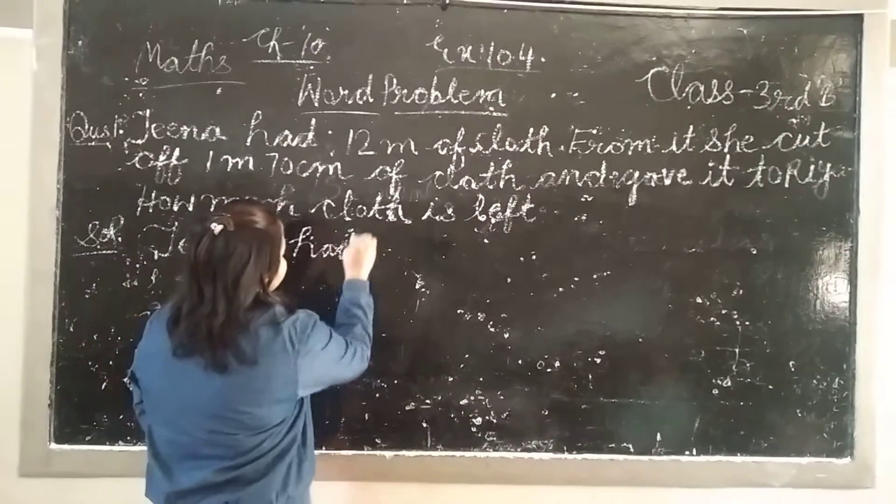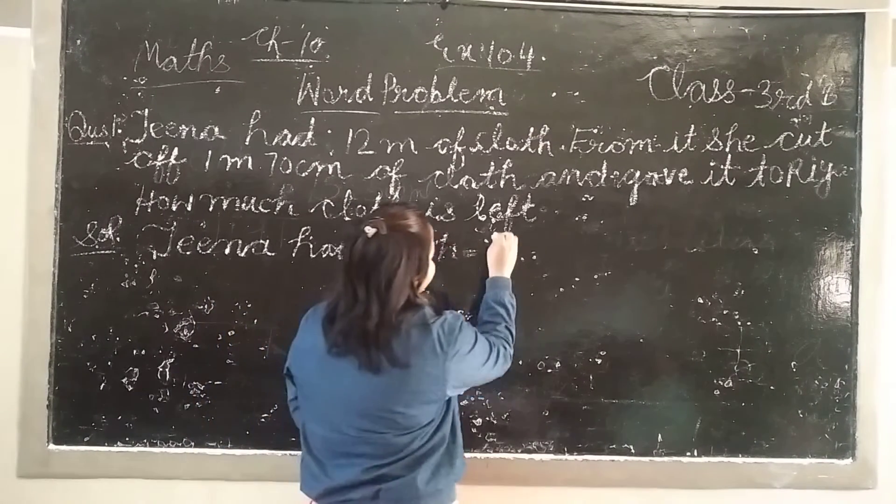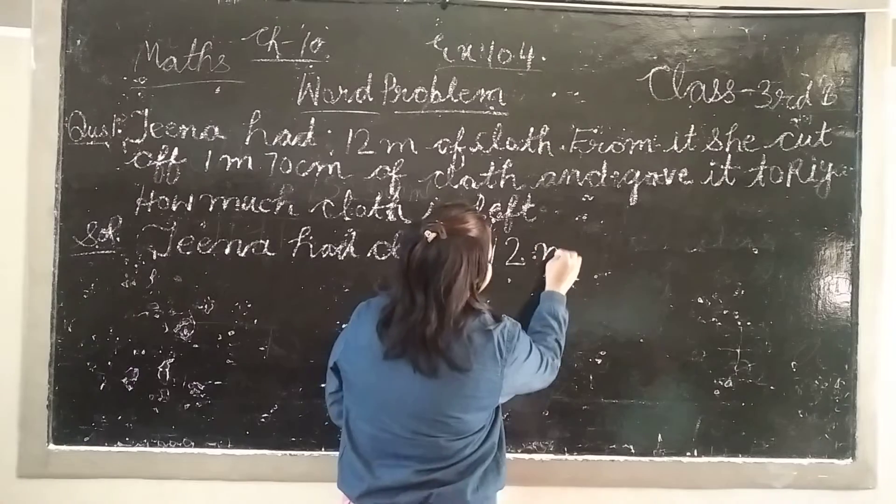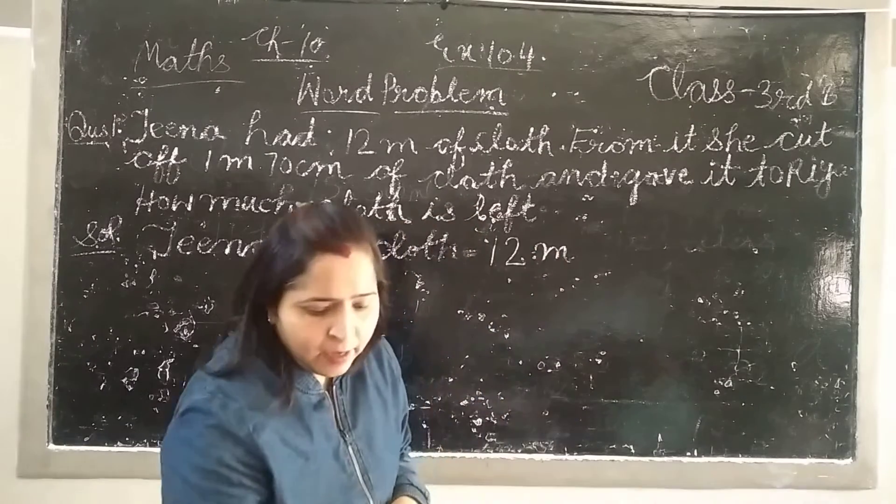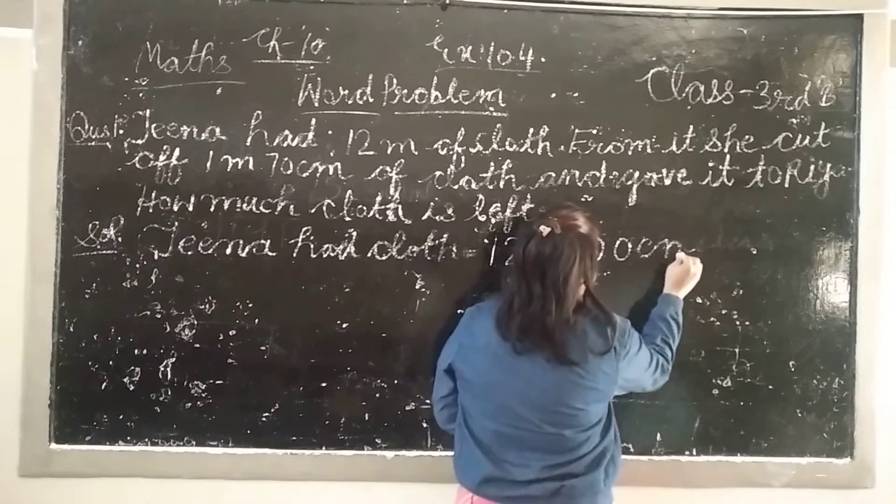5 meters of cloth. How much cloth is left? 5 meters. Basically, now you have that. In this segment you will have to show 5 minus 1 meter 70 cm. Okay.